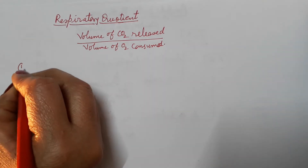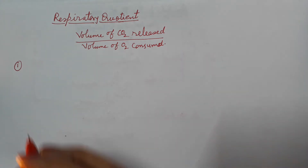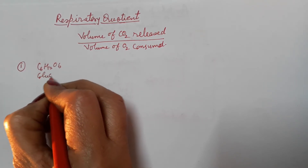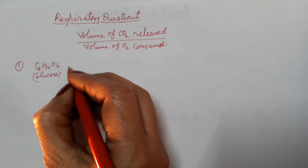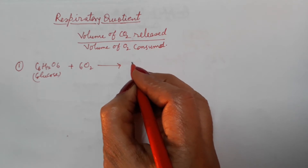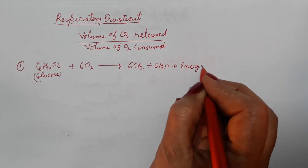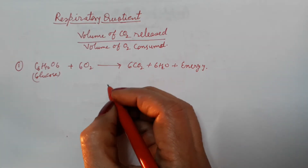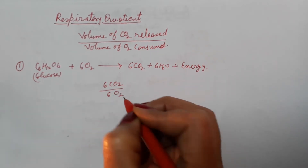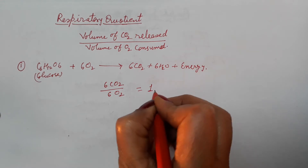In case of carbohydrate, we write the equation for aerobic respiration. Glucose, C6H12O6, acts as a respiratory substrate. In the presence of oxygen, 6 molecules of oxygen are utilized, converted into 6 molecules of CO2, 6 water molecules, and energy. So, 6 CO2 are released and 6 molecules of oxygen are consumed, making the RQ value equal to 1.